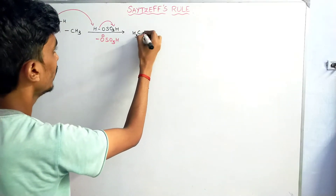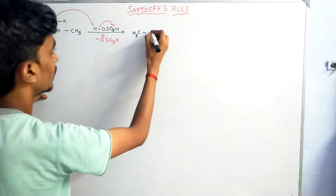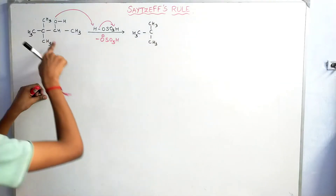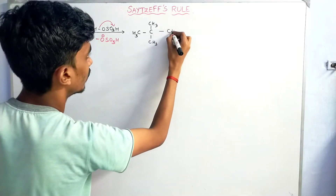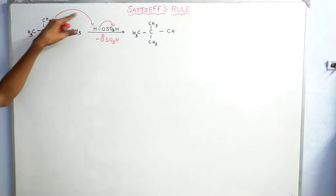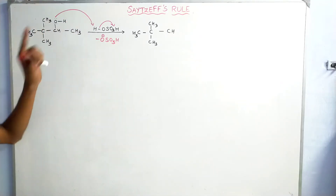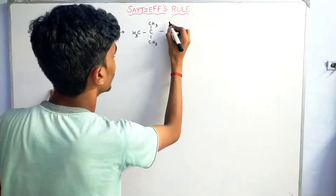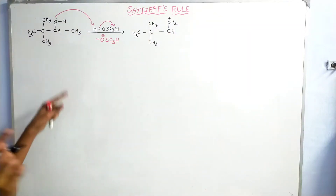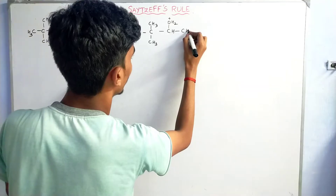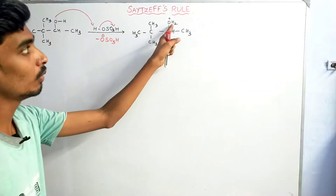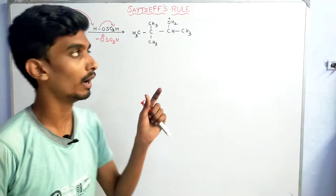So we draw the structure with CH3 groups. The oxygen, compared to hydrogen, is more electronegative, so oxygen gets a positive charge after protonation. We get O⁺H₂. This hydrogen will leave. The OH₂⁺ group is a very good leaving group.